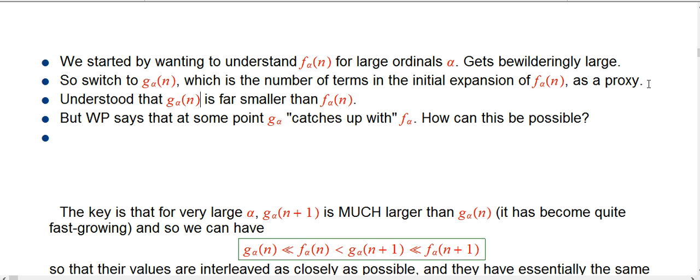We got up with the ordinal collapsing functions that I was doing in the last few videos, we got up to a point where g_α was decently big, like up to f_ε₀ size, but still it was nowhere near what the actual f was. So how can it be possible that g_α catches up with f? And that's what this particular article is about that I want to explain.